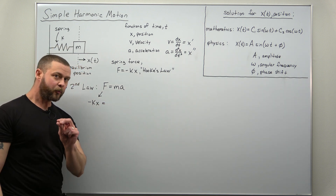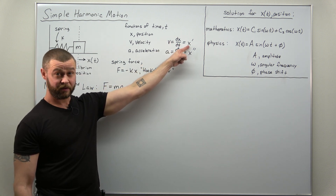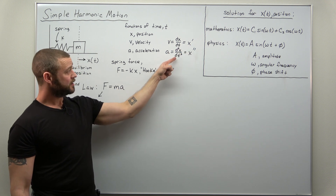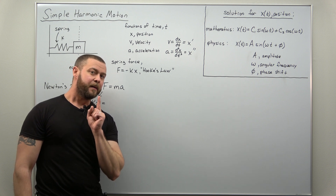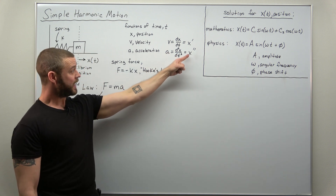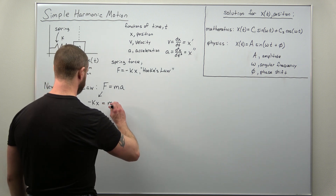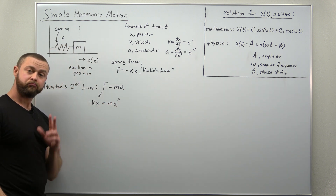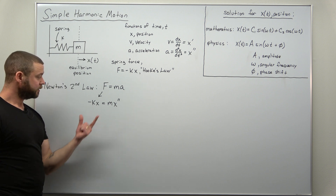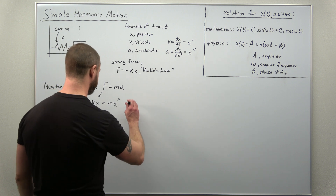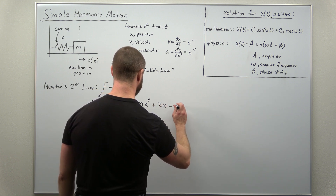Velocity is the first derivative of position, and acceleration is the first derivative of velocity. But to get a differential equation involving position, we think of acceleration as the second derivative of position and replace a with x double prime. We get a second order differential equation for the position of the object. Adding the kx term to the other side gives us mx double prime plus kx equals zero.